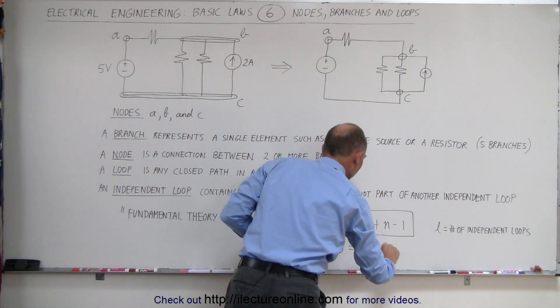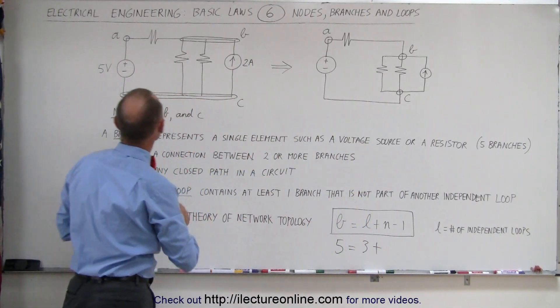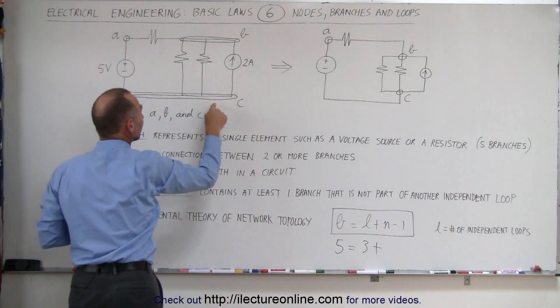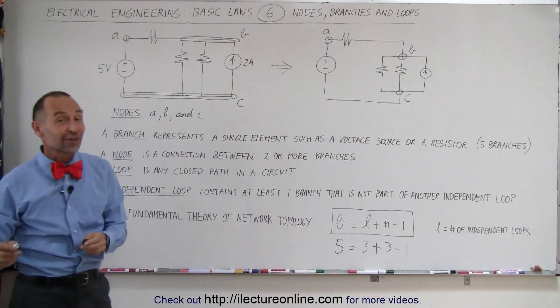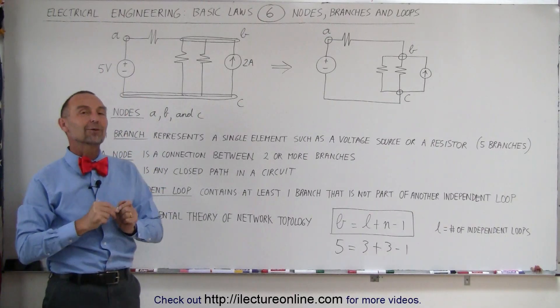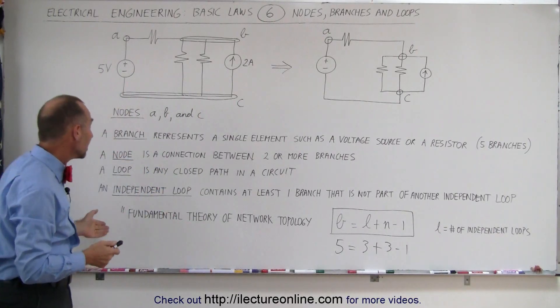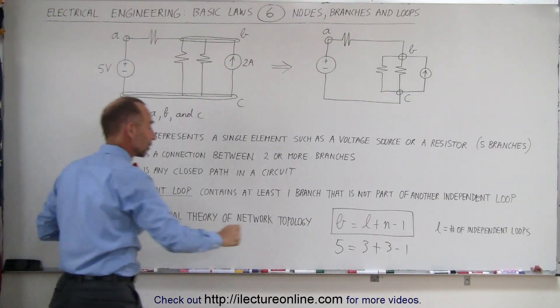This is equal to three plus how many nodes are there? A, B, and C. There are three nodes, minus one. And sure enough five equals six minus one, or five equals five. That then becomes the fundamental theory of network topology.